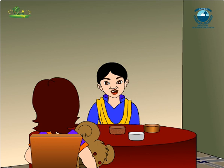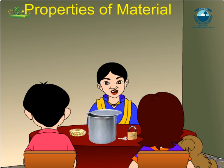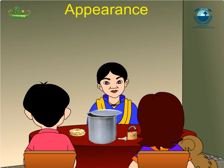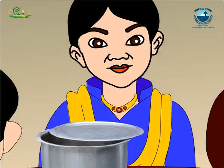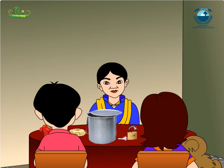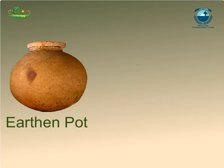Thus, we conclude that the use of material depends on their properties. Today I will tell you about various properties of matter. These properties help us to know about them and we can make use of these materials. When we talk about some material, we look first at its appearance. Materials usually look different from each other. Some have lustre and some look dull. See my new toy car — it shines. Mama, your necklace is also shining. Generally, all metallic objects have lustre. But there are some objects which have a dull appearance, like the earthen pot and this wooden stool.